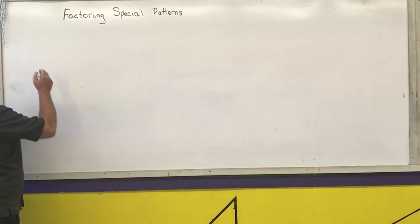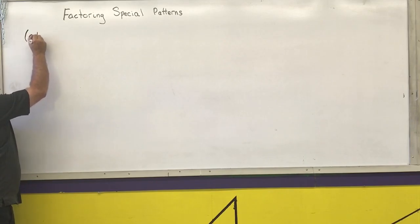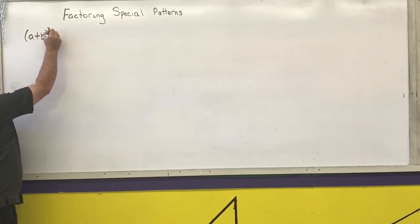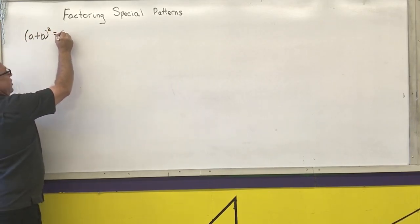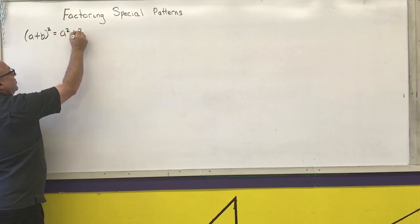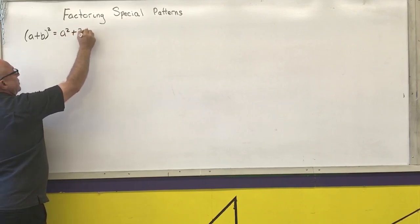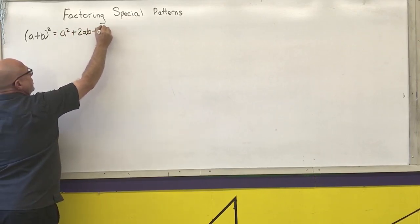As a reminder, if I have a binomial squared, that's the first term squared, plus two times the product, plus the last term squared.